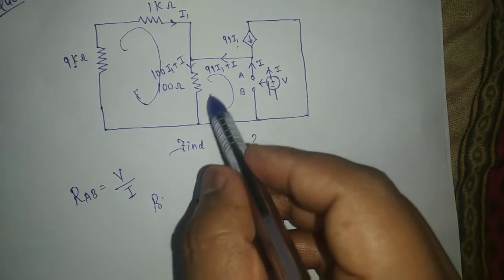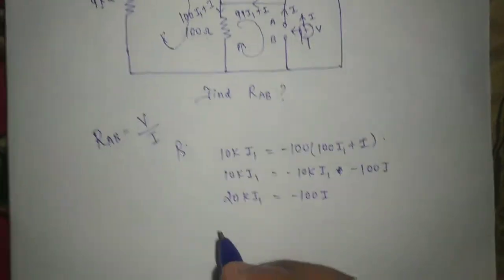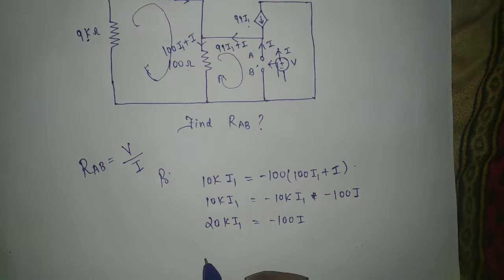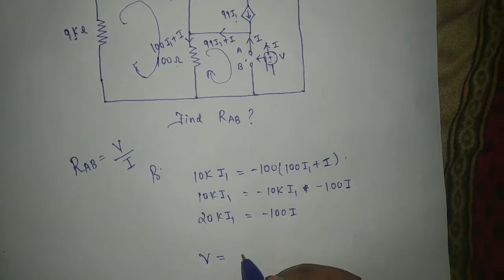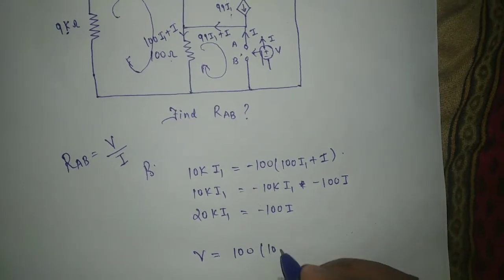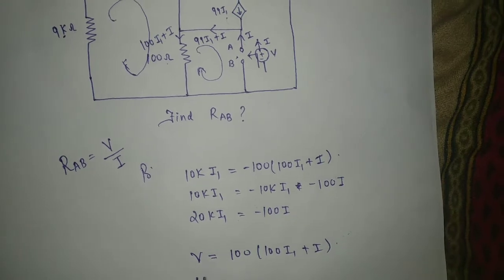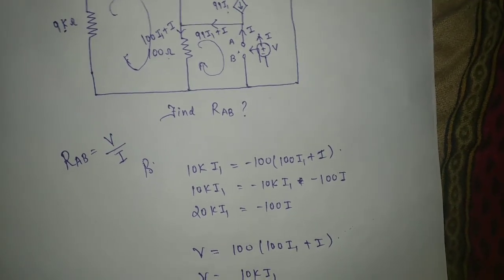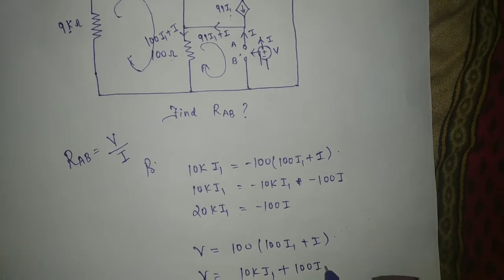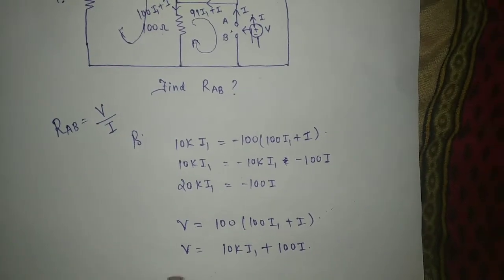Now apply KVL in this loop to evaluate V by I. So here voltage is V. V is equal to 100 times current is 100 I1 plus I, so V is 10K I1 plus 100 times 100 I1 plus I.